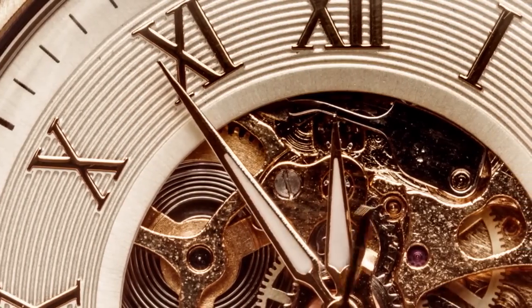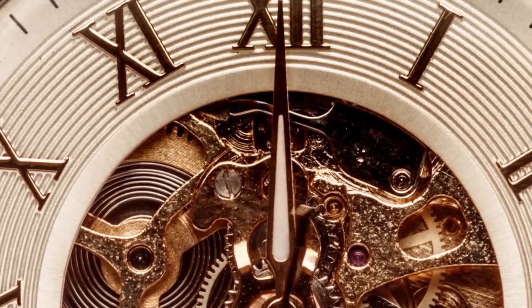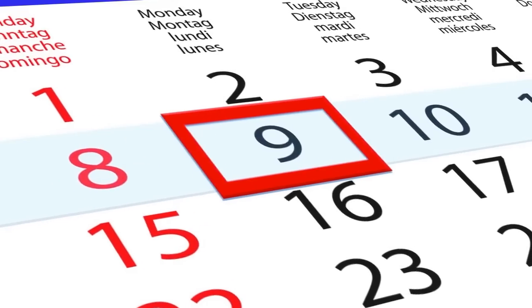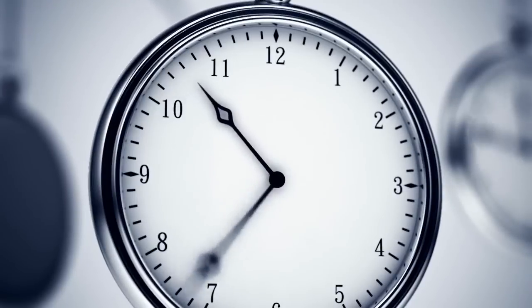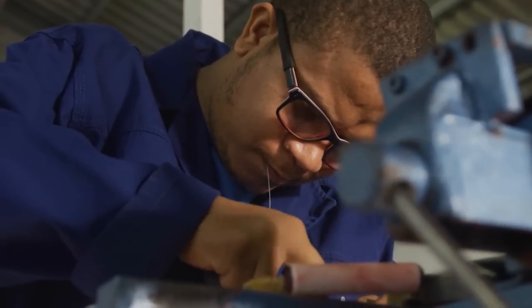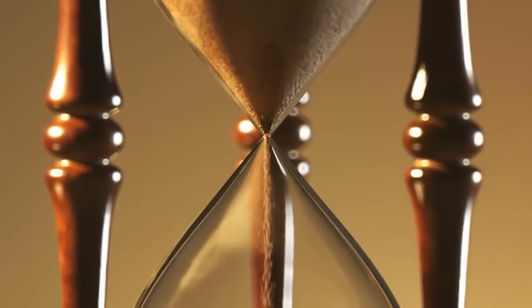We have timepieces that tell us the exact moment, but we humans invented them. Did you know that no year is 365 days long, and no day has exactly 24 hours? Although we created these time units to help us arrange our daily activities, time is not real in the traditional meaning of the word.